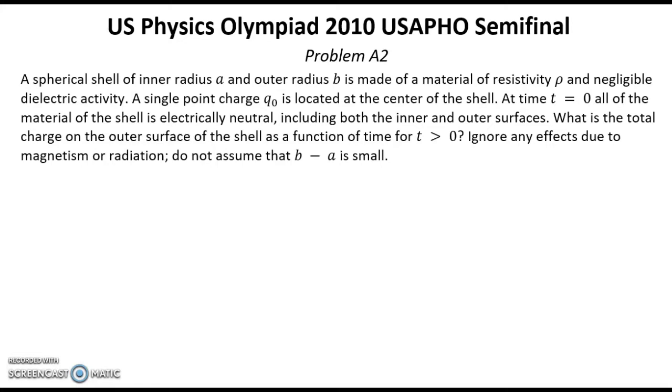A spherical shell of inner radius a and outer radius b is made of a material of resistivity ρ and negligible dielectric activity. A single point charge Q0 is located at the center of the shell. At time t equals 0, all of the material of the shell is electrically neutral including both the inner and outer surfaces. What is the total charge on the outer surface of the shell as a function of time for t greater than 0?